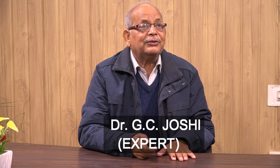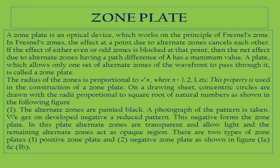The first example of this type of device is a zone plate. A zone plate is an optical device which works on the principle of Fresnel's zones, where the effect at a point due to alternate zones cancels each other. A zone plate is an experimental device constructed such that the alternate half period zones are blackened so that no light passes through them.